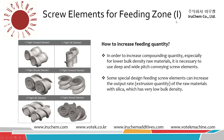For the screw element in the feeding zone, we need to think about how to increase feeding quantity. These elements include the one-plied folding element, one-plied SK element, and one-plied Schaubert element, as well as two-plied elements which we normally use. In order to increase the compounding quantity, especially for lower bulk density long materials, it is very necessary to use deep and wide feed conveying screw elements like the SK element, which has more internal volume.